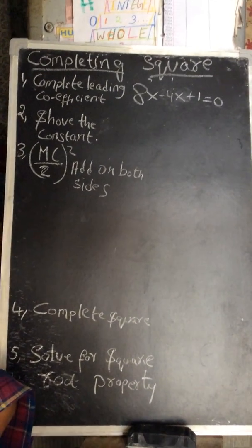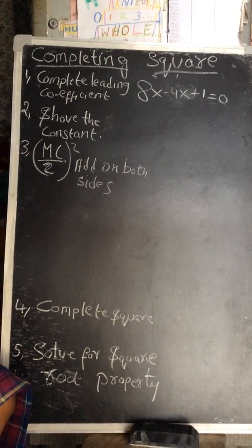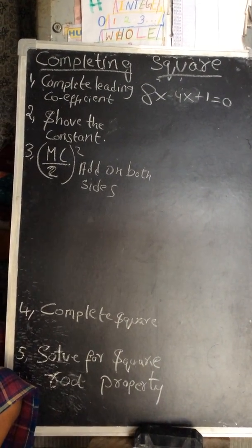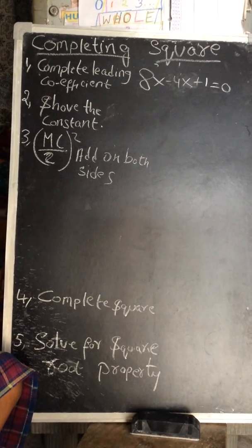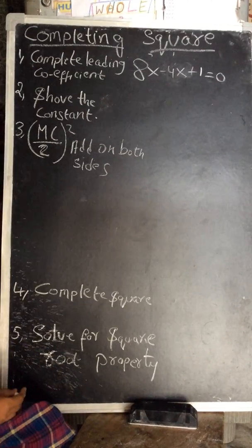To complete the square, first complete the leading coefficient. Second, isolate the constant. Third, MC square - add on both sides. Fourth, complete the square. Fifth, solve for the square root of the quantity.